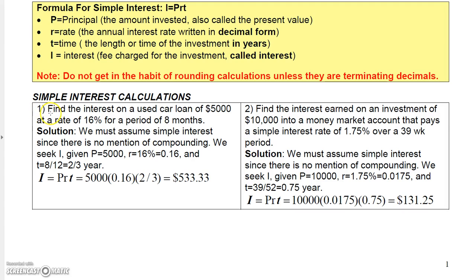Number one says find the interest on a used car loan of $5,000 at a rate 16% for a period of eight months. So basically, since there's nothing in here about money being compounded, we know that we're dealing with a simple interest loan. And so all we have to do to find the interest is to multiply the principal, and the principal here is given right here is $5,000.